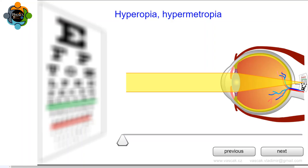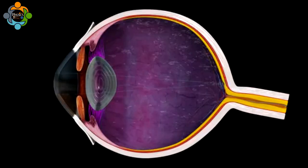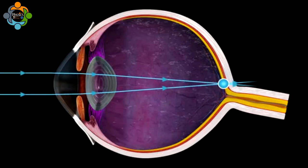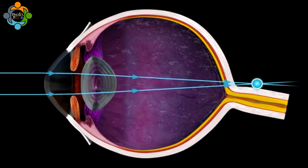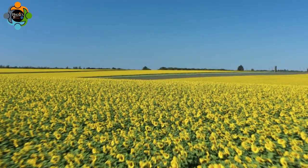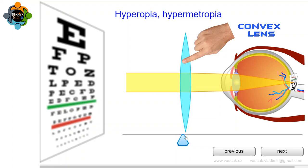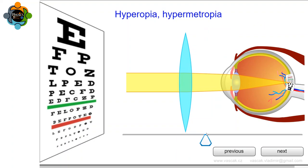First of all, hyperopia or hypermetropia, often referred to as farsightedness, is a common refractive error. In terms of physics, this defect occurs when the eye's lens and cornea focus incoming light behind the retina instead of directly on it. This is often due to the eye being shorter than normal. As a result, close objects appear blurry while distant objects are clear. The physics solution is the use of converging or convex lenses, which bend the incoming light rays so that they focus directly on the retina, correcting the refractive error and improving near vision.